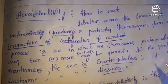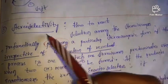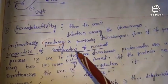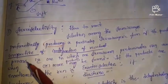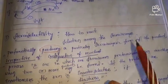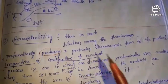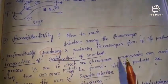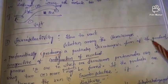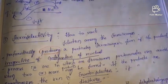Next, stereoselectivity. Stereoselectivity means selection among the stereoisomers — preferentially producing a particular stereoisomeric form of the product, irrespective of the configuration of the reactant. This point is important: the product formed does not depend upon the configuration of the reactant. We can also say it is the process in which one stereoisomer predominates over another when two or more products may be formed.